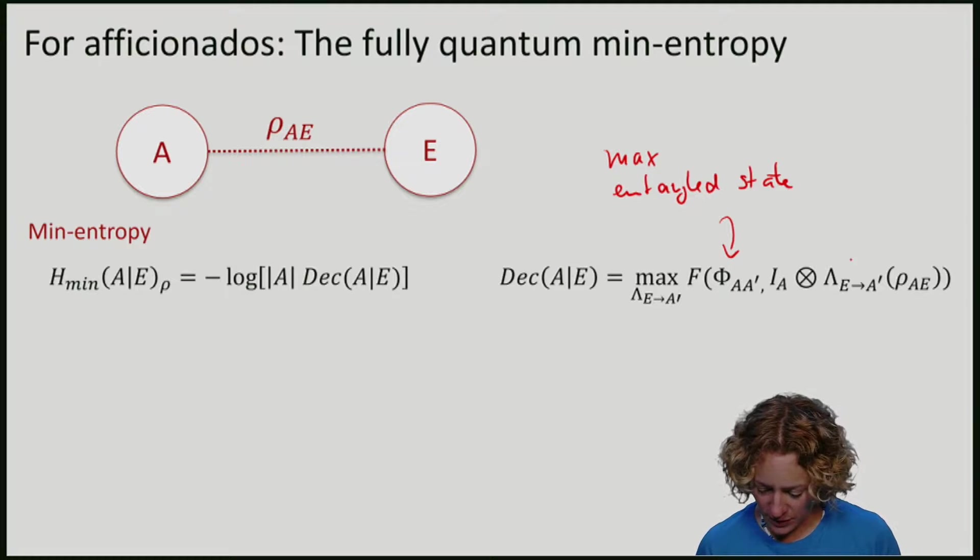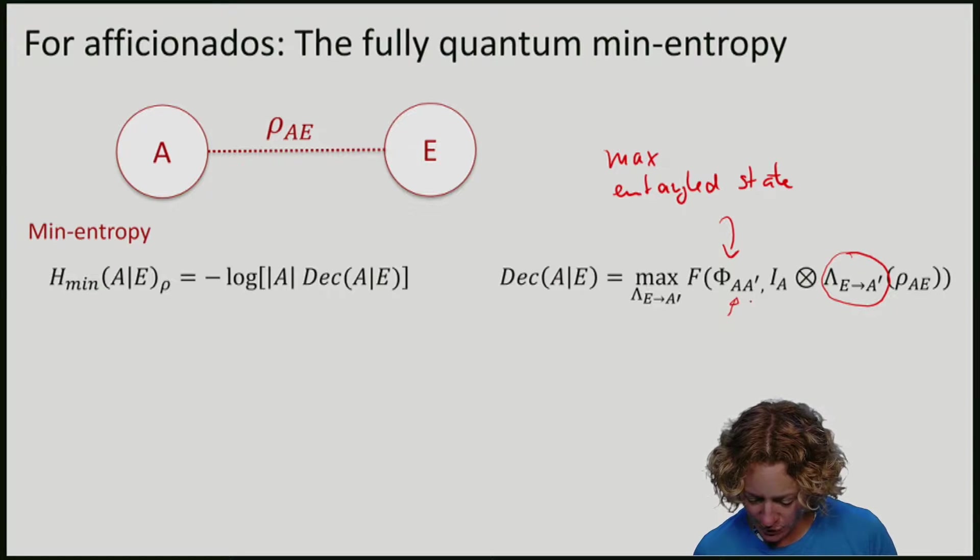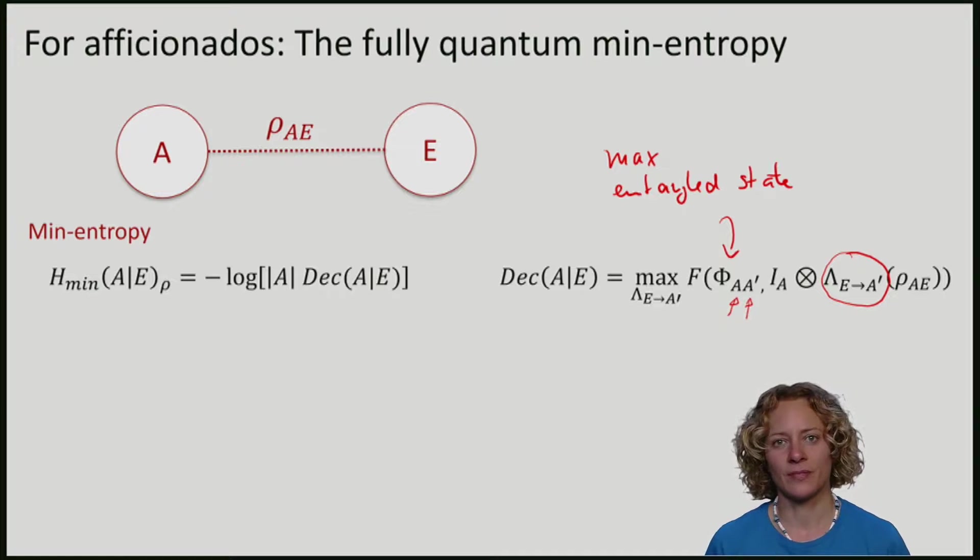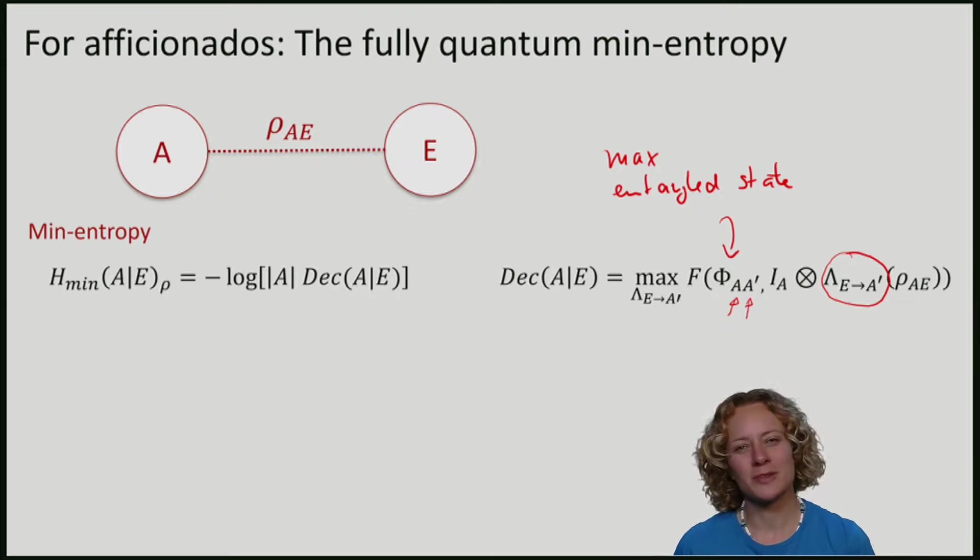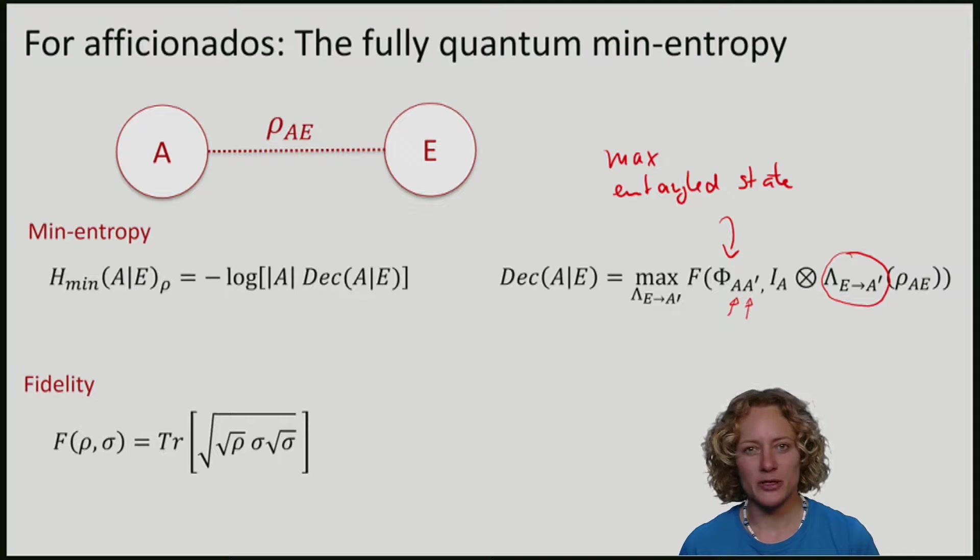So we want to bring this state as close as possible to the maximally entangled state. And closeness is here measured in terms of the fidelity, which is defined as follows. The fidelity is a measure that is one if the states are the same, and gets smaller and smaller the more different the states are.